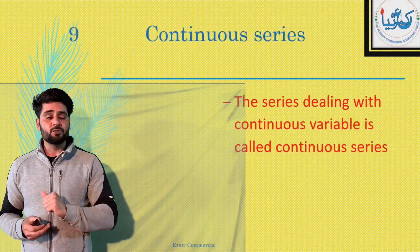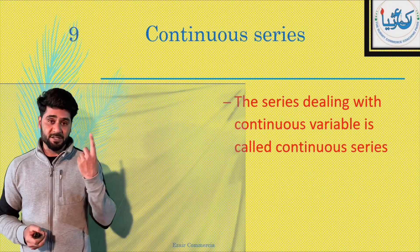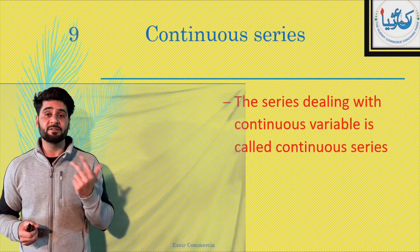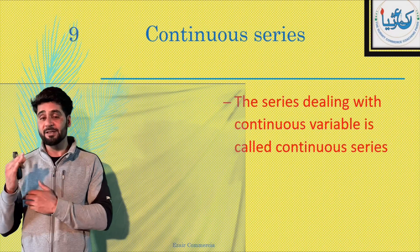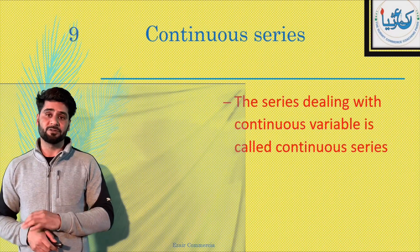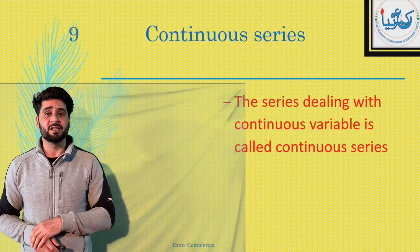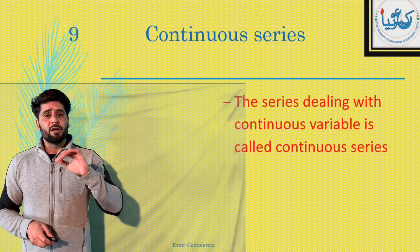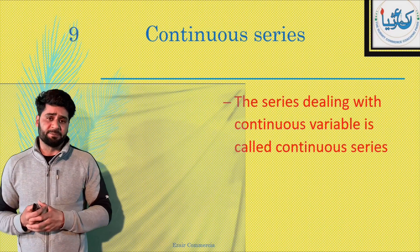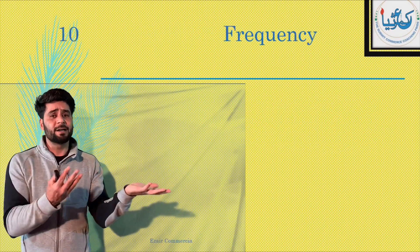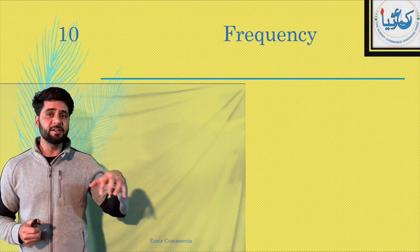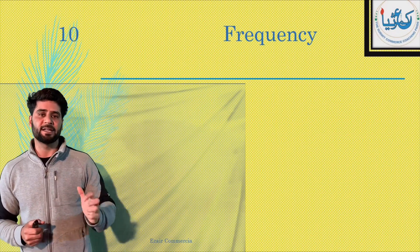Let me repeat. The series is of two types. The first one is discrete series and the second one is continuous series. The series that deals with discrete variables is called discrete series, and the series that deals with continuous variables is called continuous series. Now, another term is frequency. Ek variable kitni baar aata hai — that's called frequency.